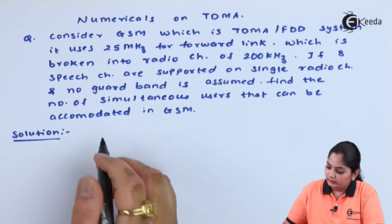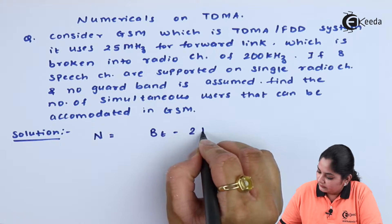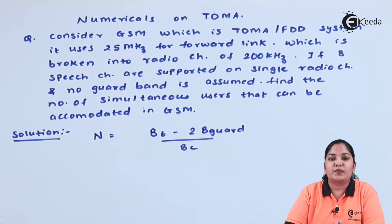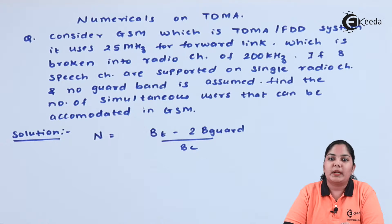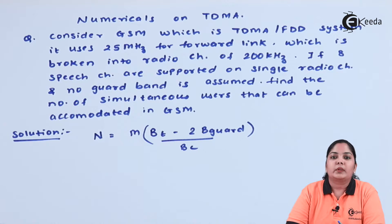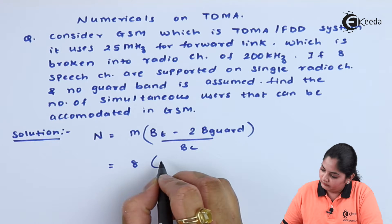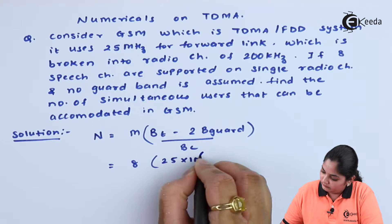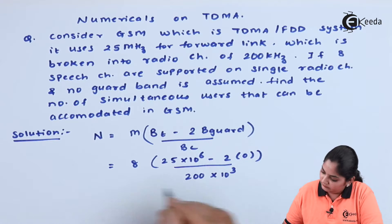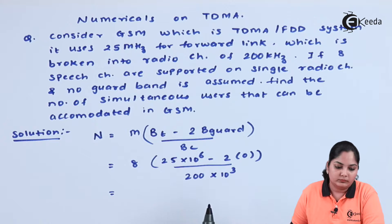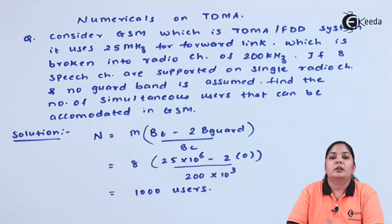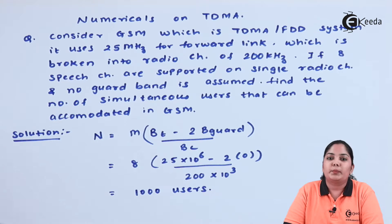Since no guard band was considered, we keep the guard band as 0. The final answer is 1000 users can be supported on the system.